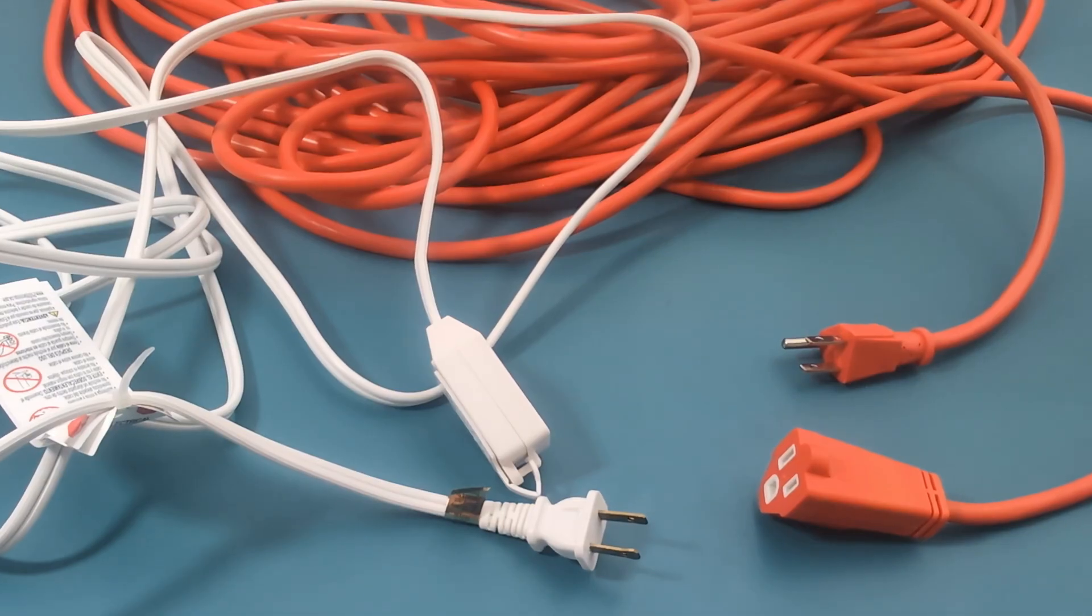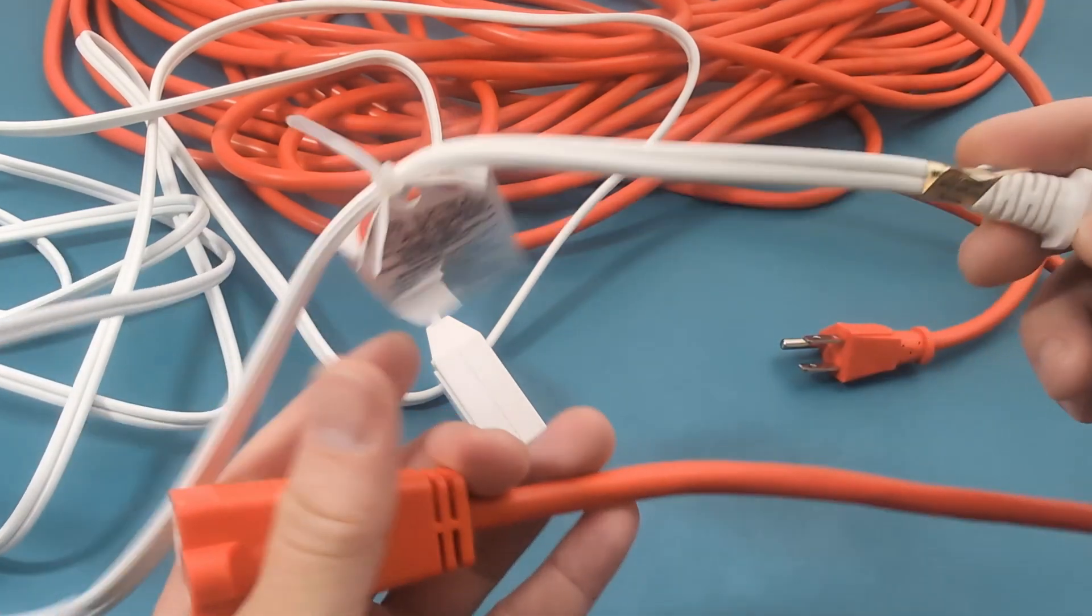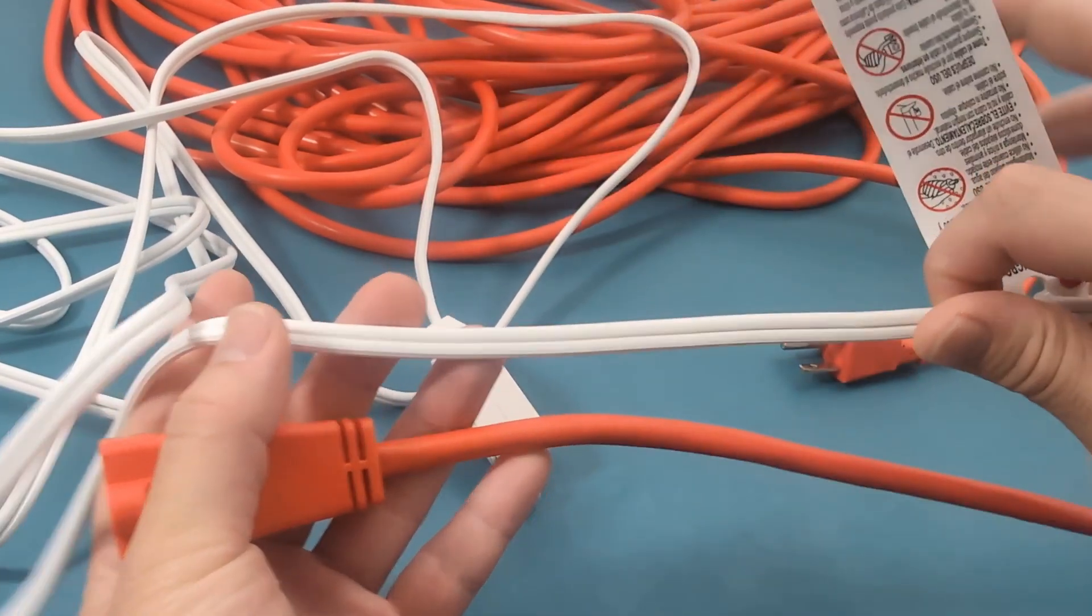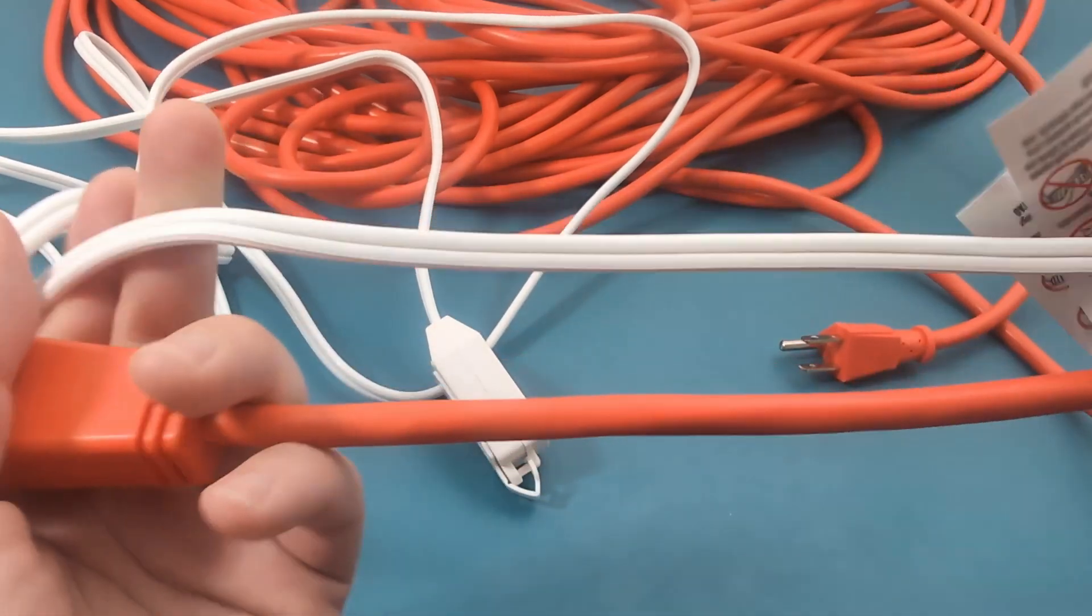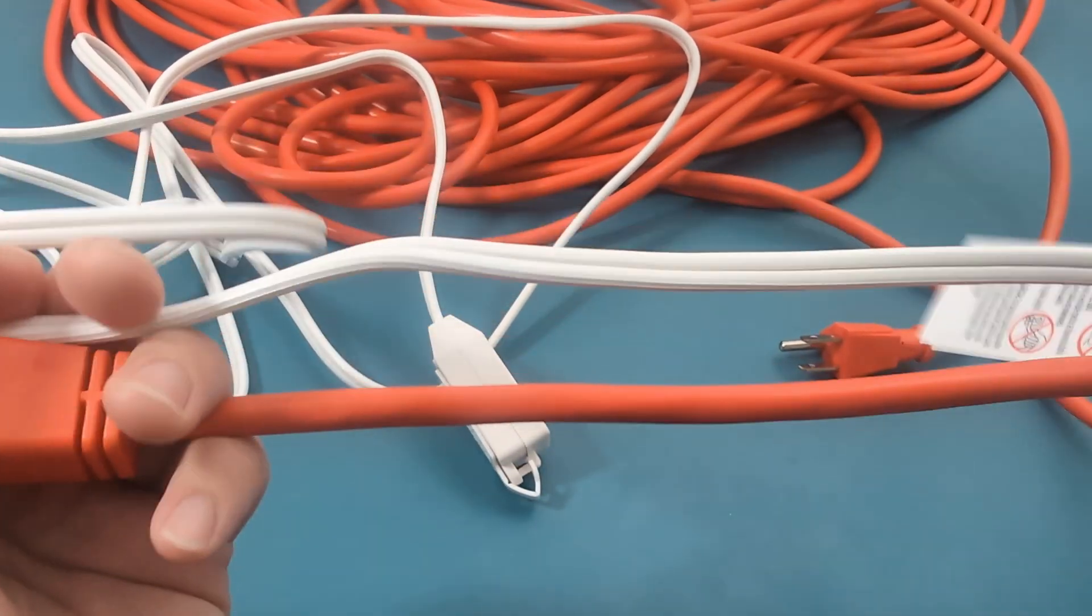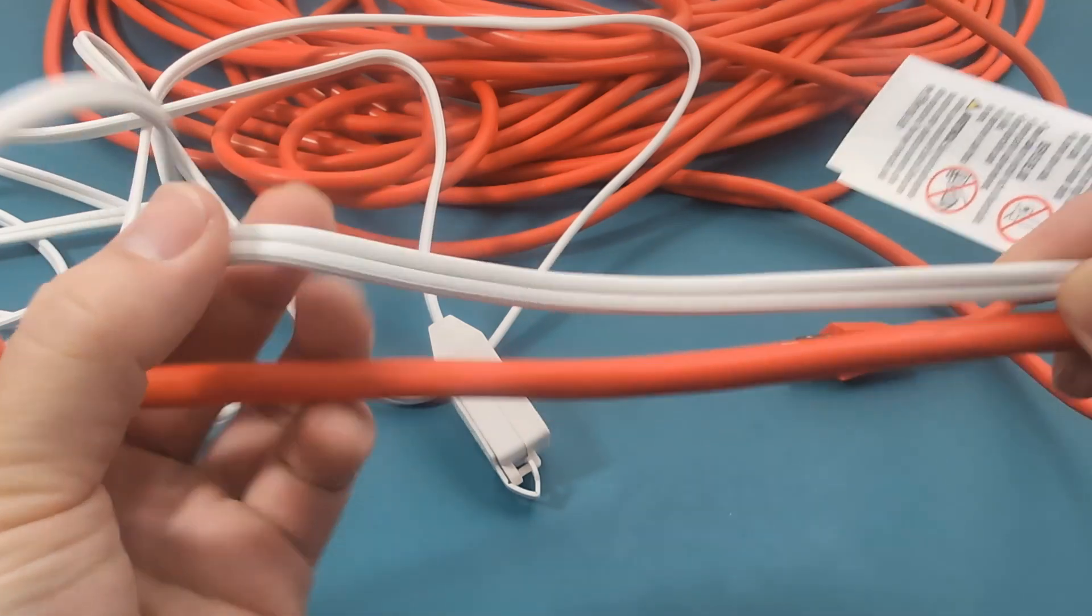Pro tip number three: I have a white extension cord, which is for indoor use. Indoor cords should never be used outside as they lack the proper insulation to withstand moisture and temperature changes. As you can see, outdoor extension cords are designed with a thick, durable, protective layer.